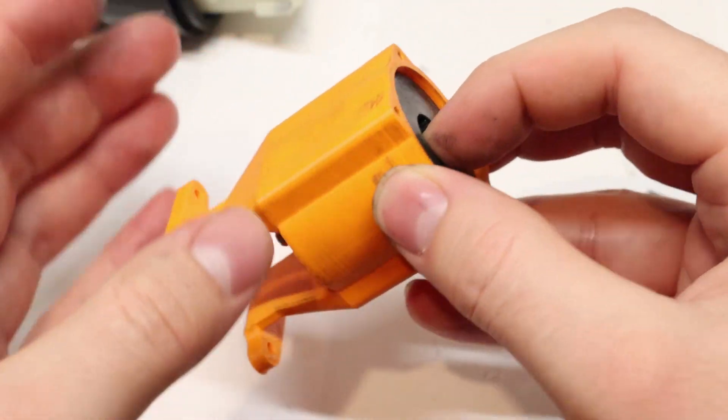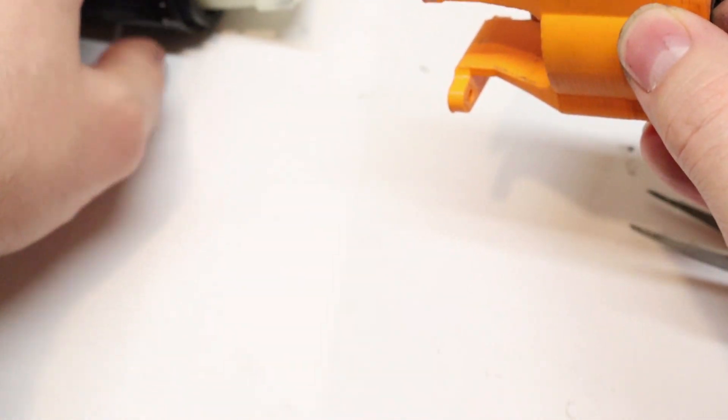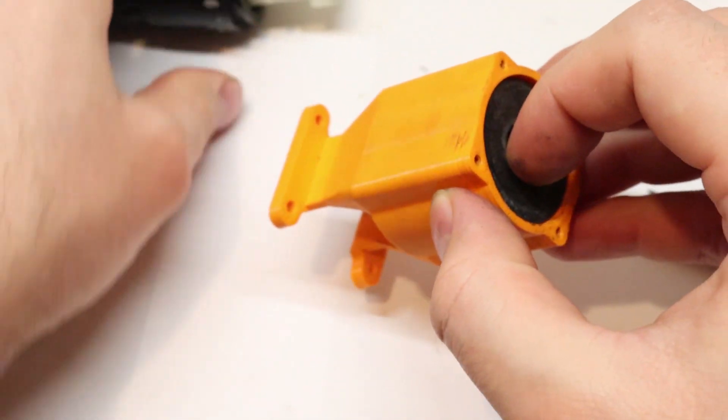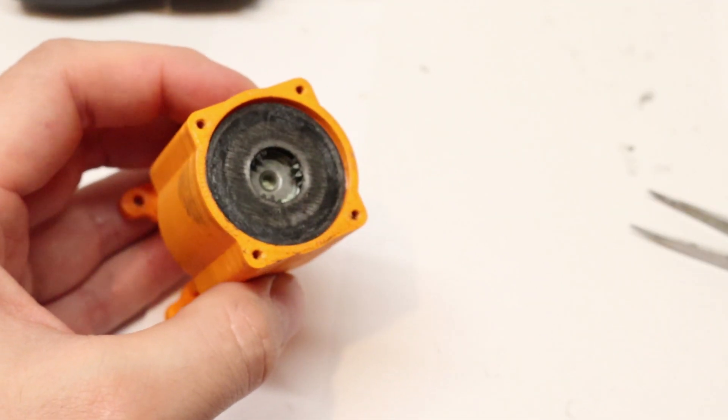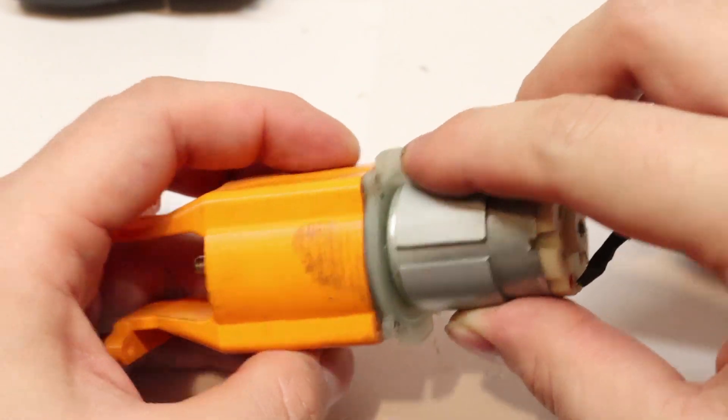You've basically transferred the entire planetary gear assembly from the drill housing into this self-made housing. Then you can put on the motor.